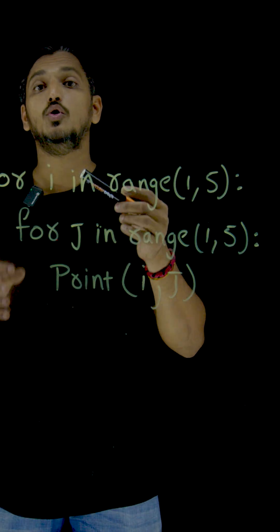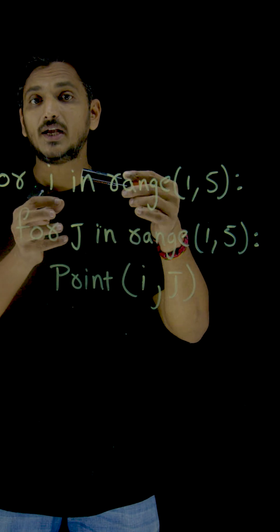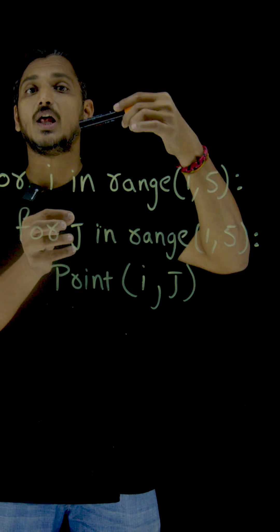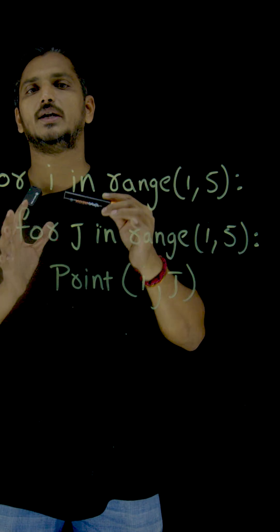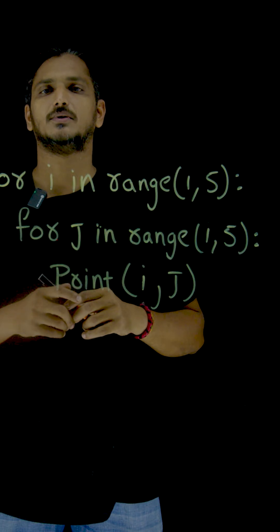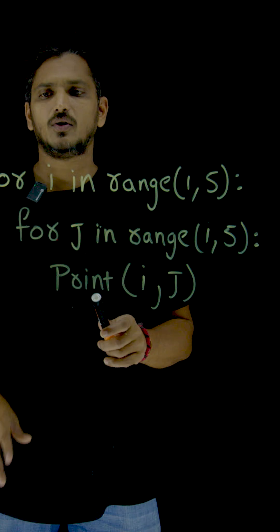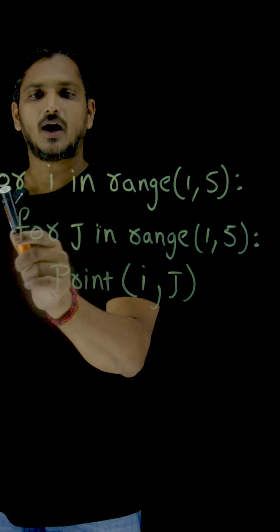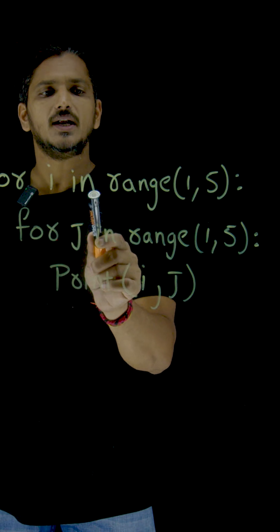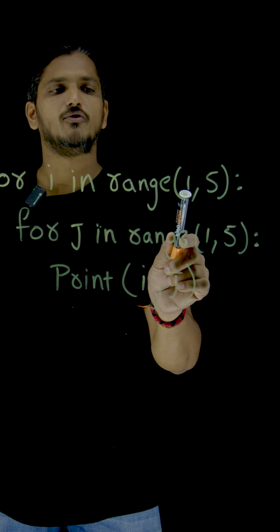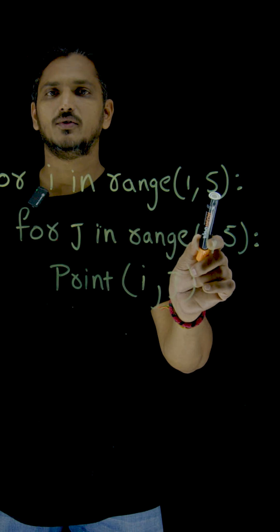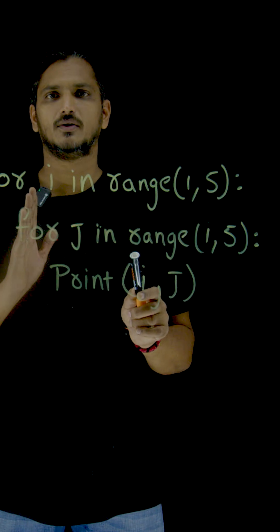Except nested loops. A loop, if you write a loop within the loop, we call it as nested loops. For i in range of 1 to 5 — this is one loop.